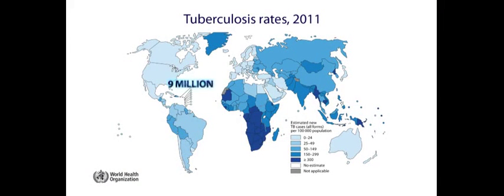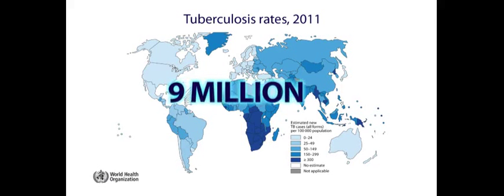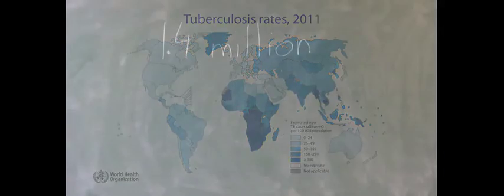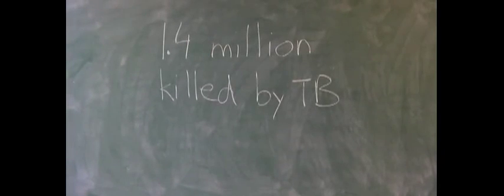This year, about 9 million people will contract tuberculosis, mostly in developing countries. The only infectious disease that kills more people is HIV AIDS.